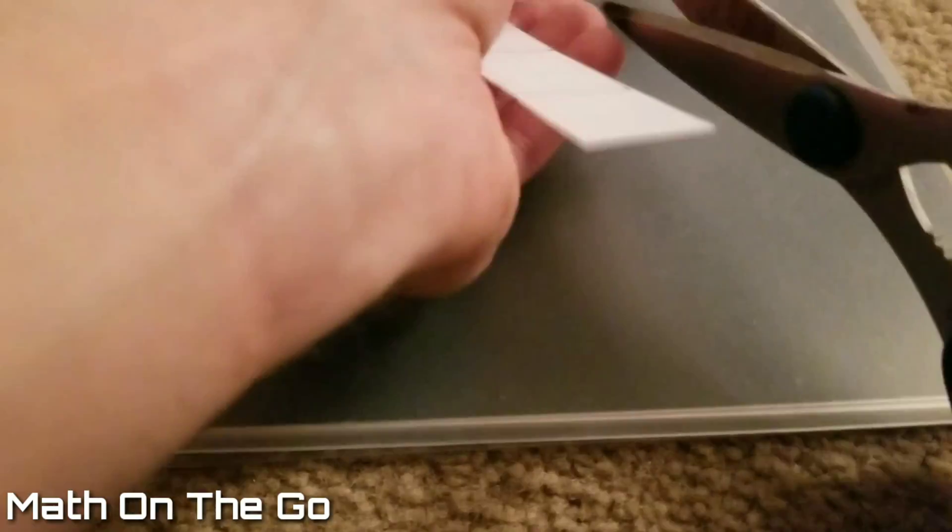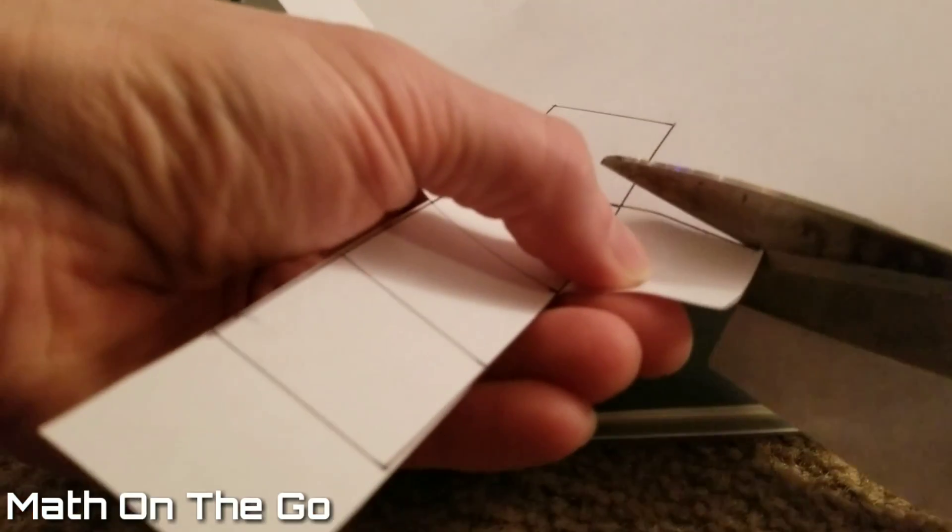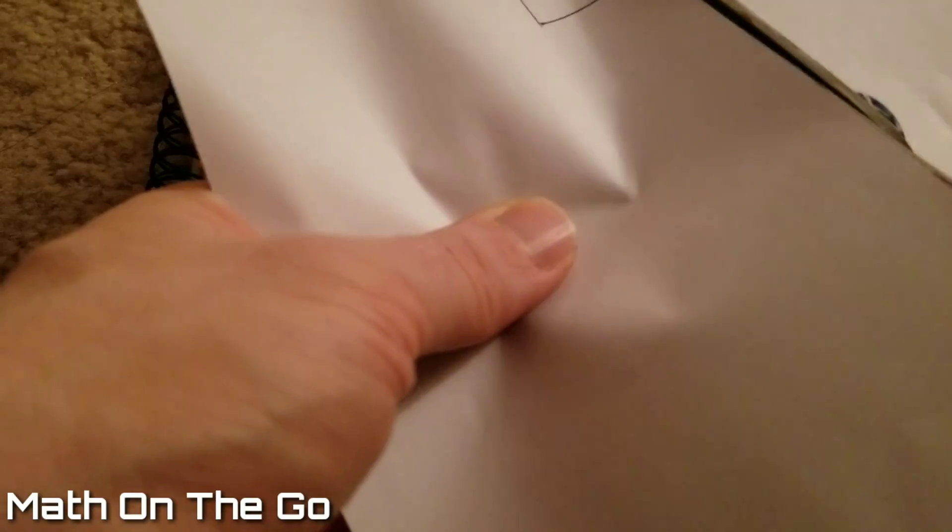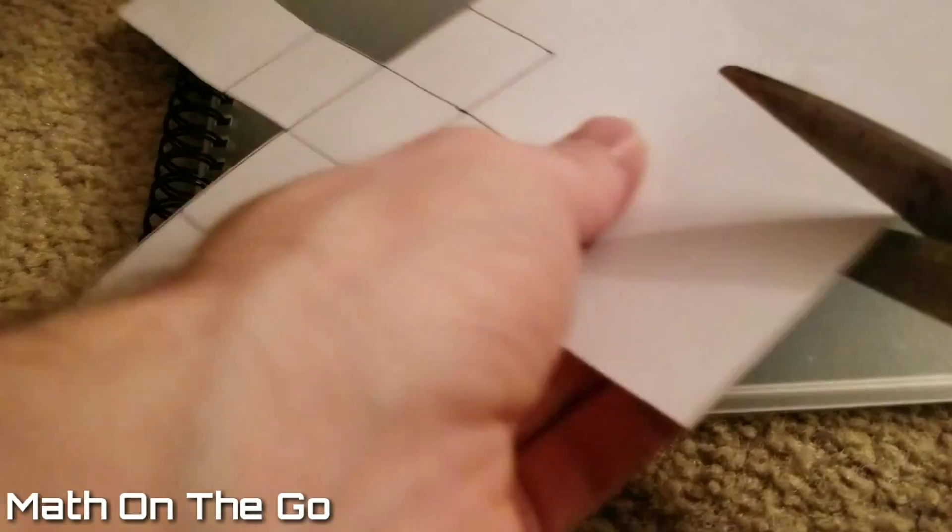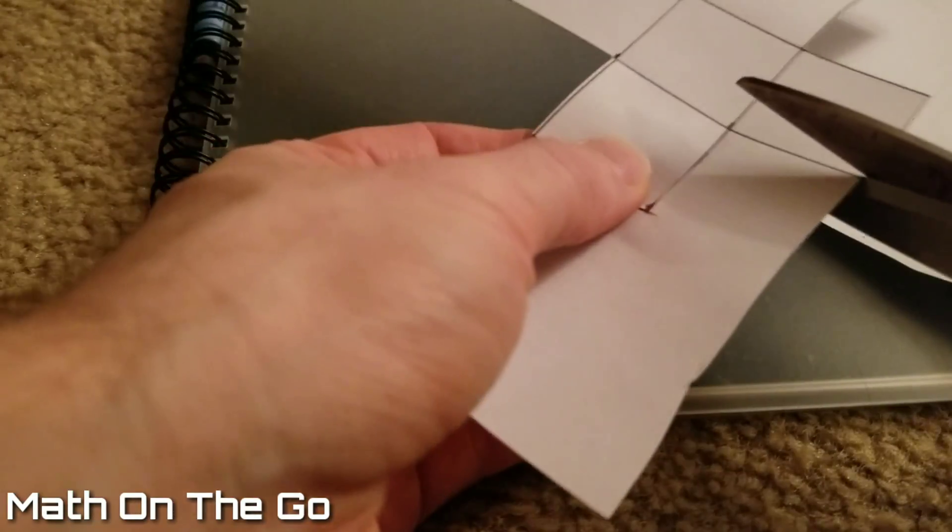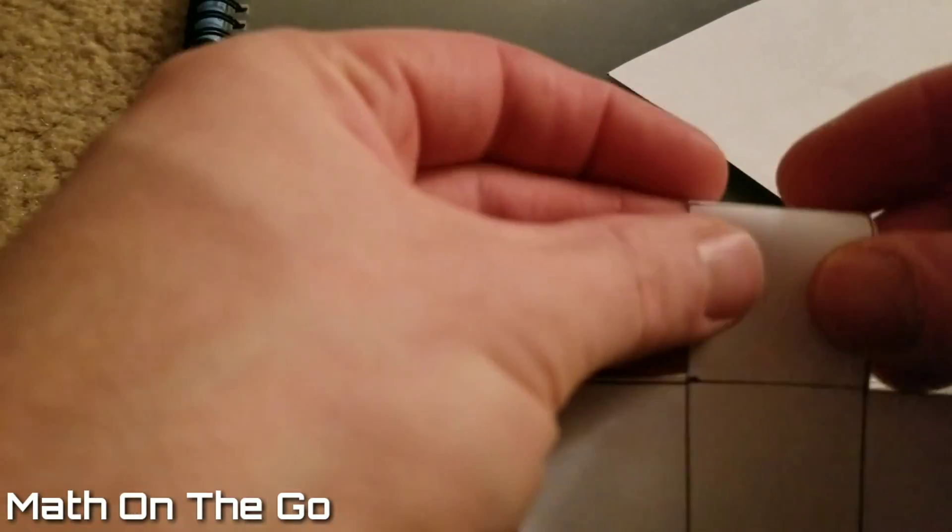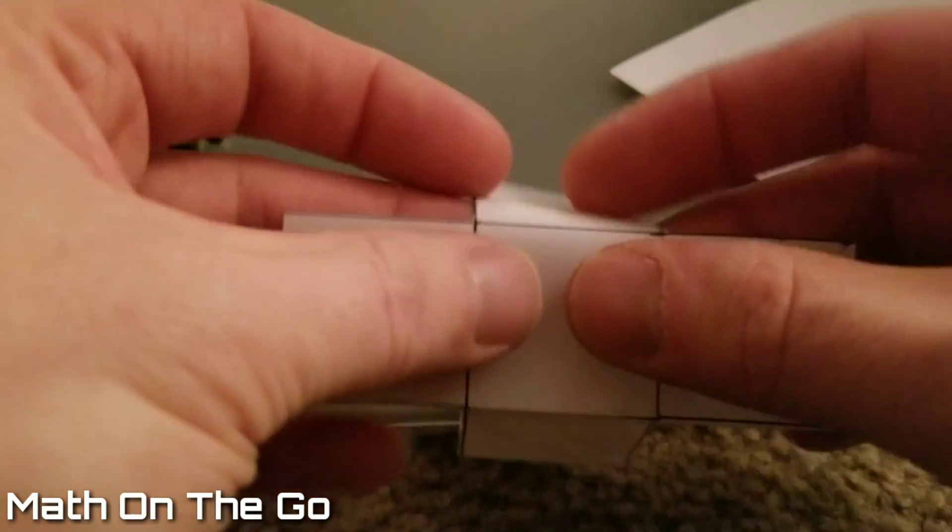The problem states that an ant starts at one vertex of a cube, with the cube having sides of equal length. In this case, we are using a three by three by three centimeter cube, with each face being a three by three centimeter square. Calculate the shortest distance the ant can walk to the furthest vertex from the starting point.